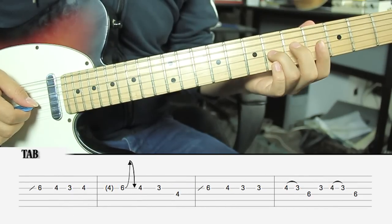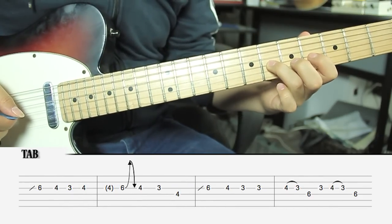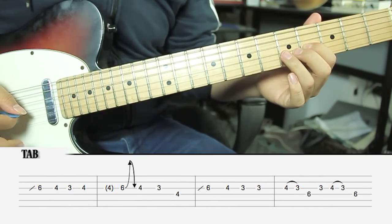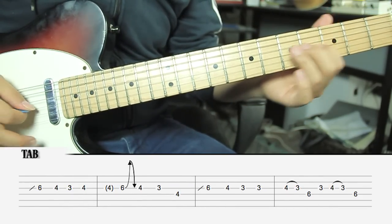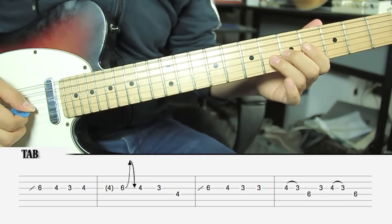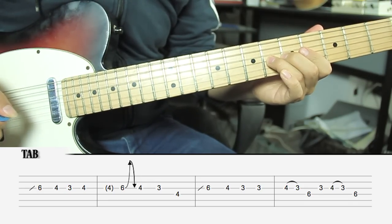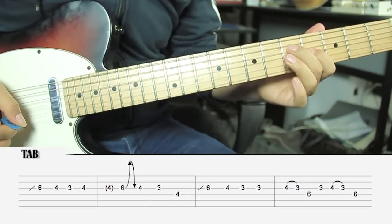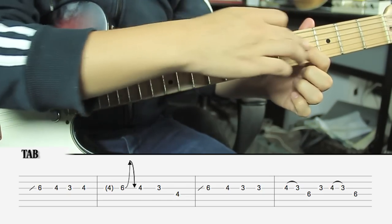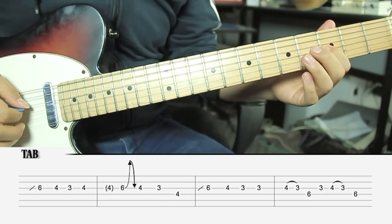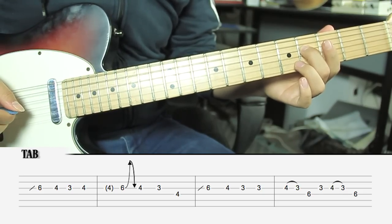We start in C, then B, then B Eb, then B, then bend and release the one tone, then we come to B B Eb, F# slow.